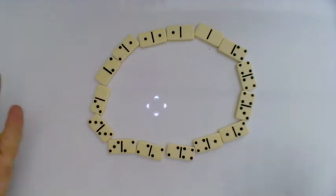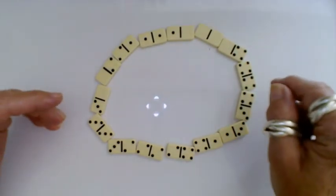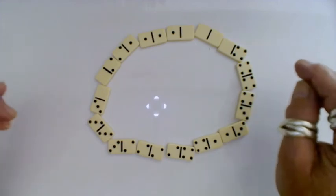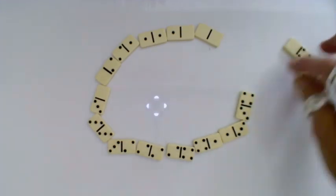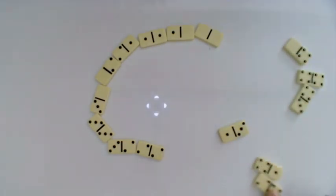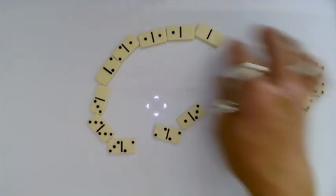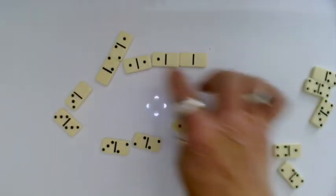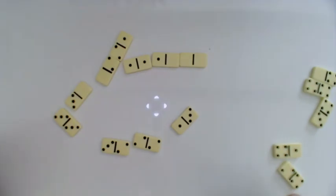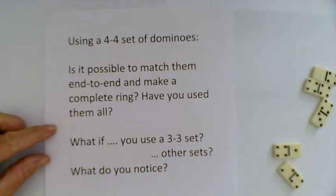So is that the only way of doing it? And what if I use just the three three set? So I take out all the fours. Is it going to be possible to make a complete ring with just that set? So simple snack, a set of dominoes, and that's your task.